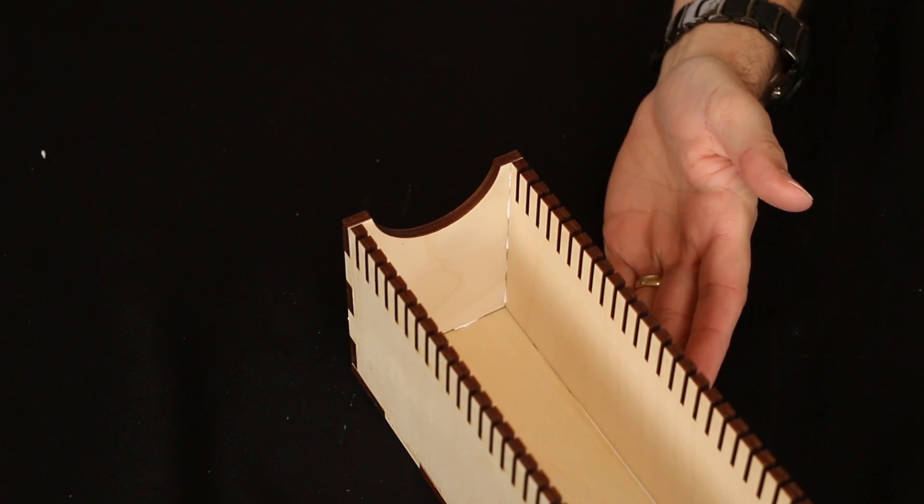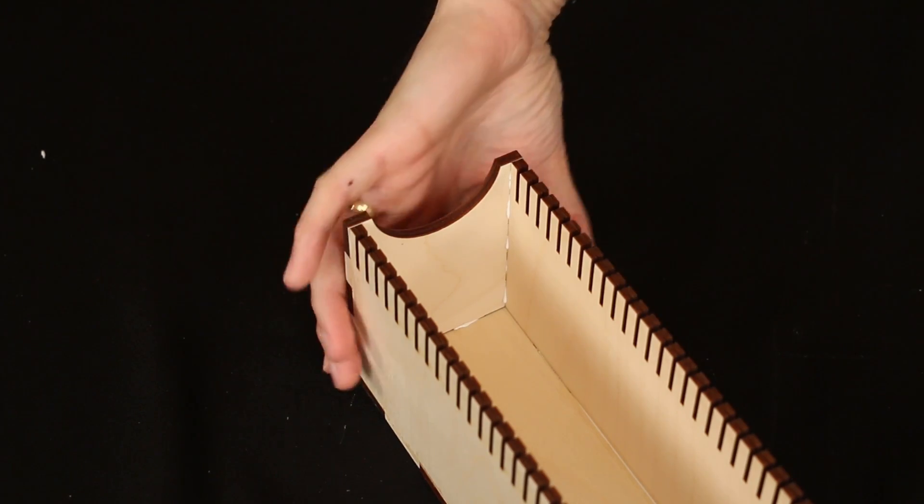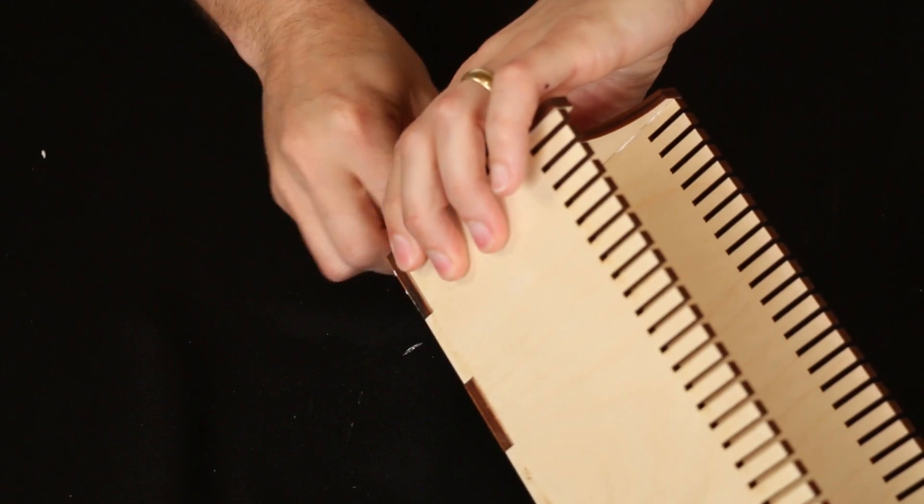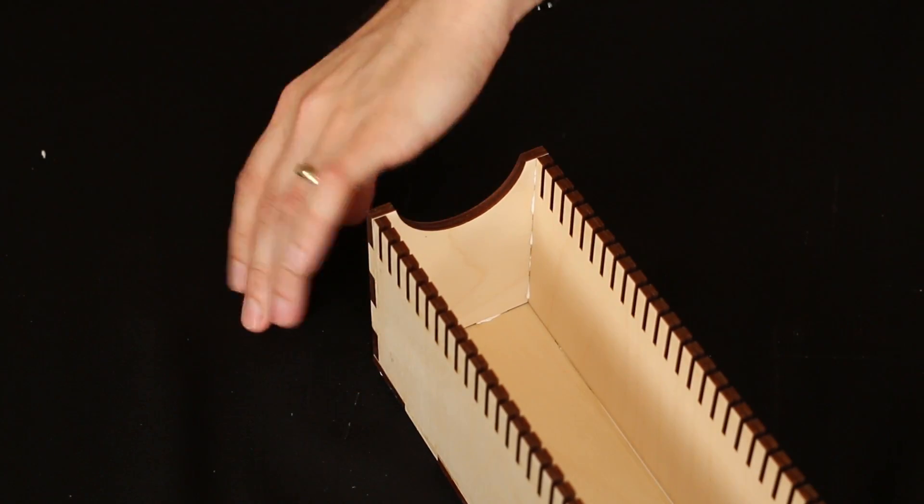And don't forget the bottom of the box as well. Some of the glue can come mushing out there. So you want to just clean that off, so you don't get stuck to your tabletop.